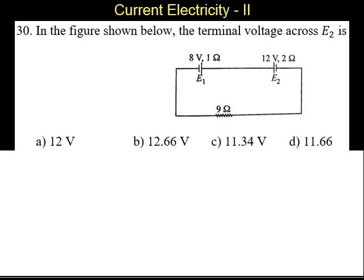Question number 30. In the figure shown below, the terminal voltage across E2 is: A, 12 volts; B, 12.66; C, 11.34; and D, 11.66 volt.